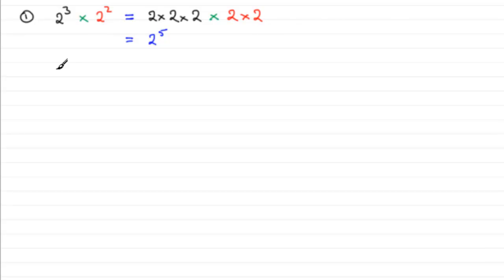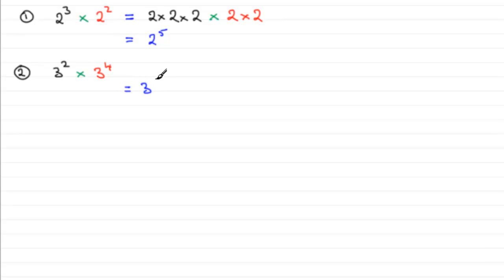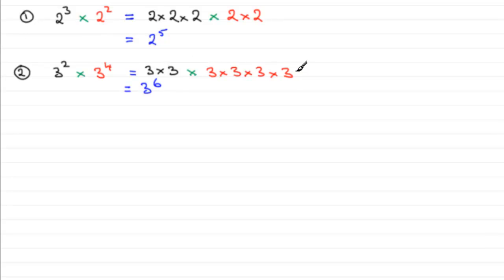Here's another example. We'll have 3 squared multiplied by 3 to the power 4. The answer should be 3 to the power 6 — we can write that straight away. Why? Because 3 squared is 3 multiplied by itself twice, and 3 to the power 4 is 3 multiplied by itself 4 times. In total, we've got 3 repeatedly multiplied by itself 6 times over — the result of adding our powers 2 and 4.